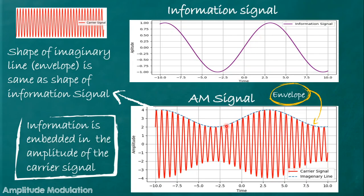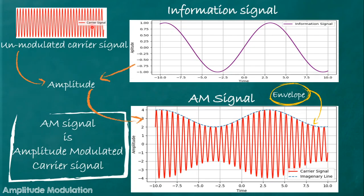If the instantaneous value of the information signal is increasing, the peak amplitude of the carrier is also increasing. This carrier signal with a constant peak — before amplitude modulation — is called the unmodulated carrier. When we vary the amplitude of this carrier according to the information signal, the amplitude varies accordingly, and as a result we get the AM signal, or amplitude modulated signal.